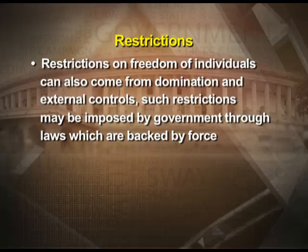The second source of restraint is that restrictions on freedom of an individual can also come from domination and external control — such restrictions may be imposed by a government through laws backed by force. As against the sovereign government of a nation, constraints by foreign rulers are severe and often backed by ruthless force and coercion. For example, the British imposed such force on Indians, curtailing many social, economic, and political rights of individuals under British colonial rule.